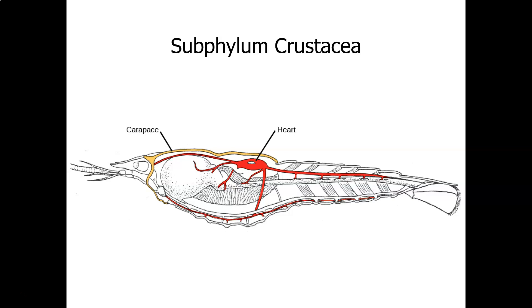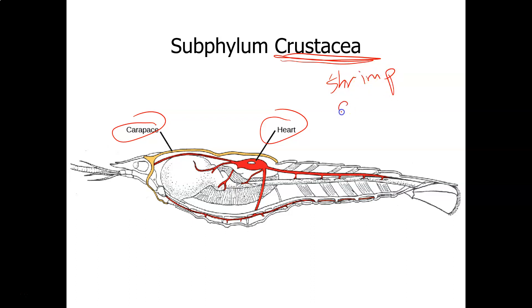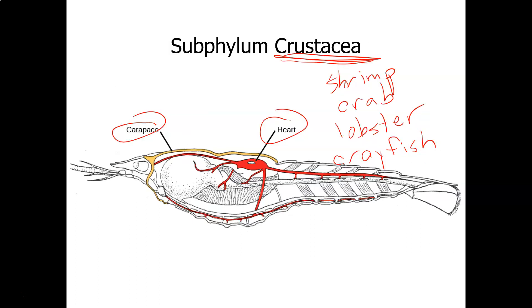The subphylum Crustacea includes shrimp, crab, lobster, and crayfish — which you may also call crawdads. Crustaceans have an exoskeleton and a carapace, and they have one heart. Another crustacean we have in lab is a barnacle; many people don't realize that barnacles are actually crustaceans — the ones that attach to boats and fishing piers that remain in the water for a long time.